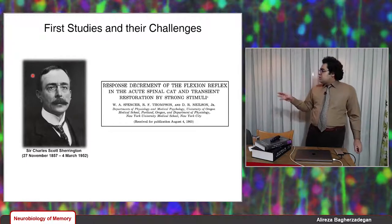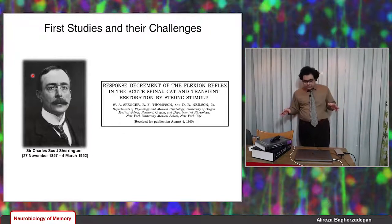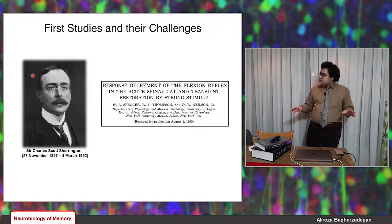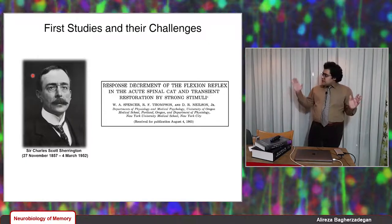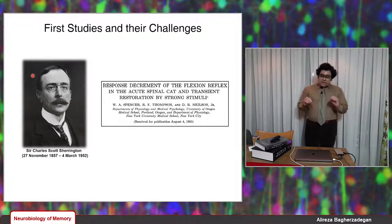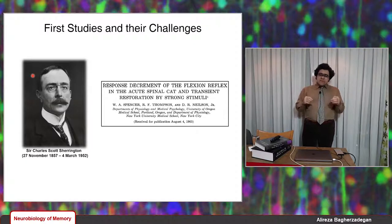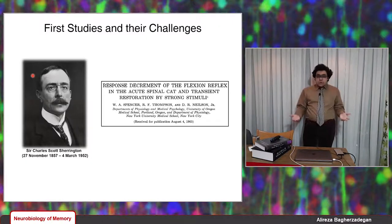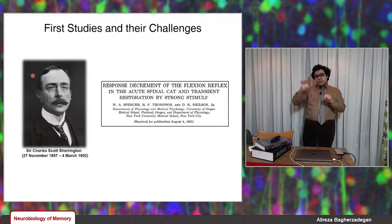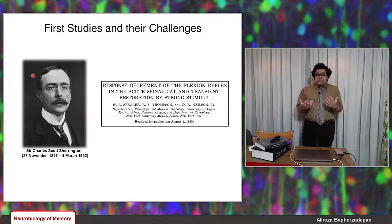Some years later, Spencer, Thompson, and Neilson did experiments at the cellular level. They found that in the cat's spinal cord there are some excitatory interneurons that make synaptic connections on motor neurons. They found that as a result of repeated stimulation — which is very common in inducing habituation — the intensity or strength of the input from those excitatory interneurons on motor neurons decreases. And that was the very first cellular evidence of the phenomenon of habituation.